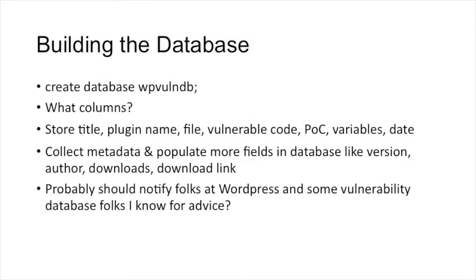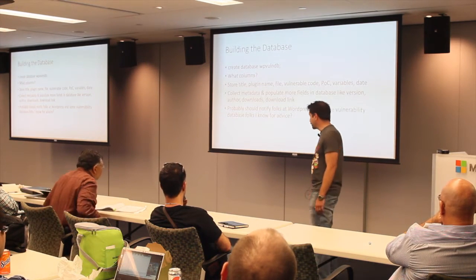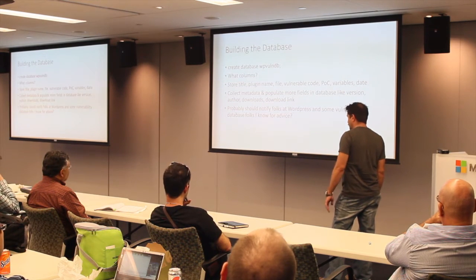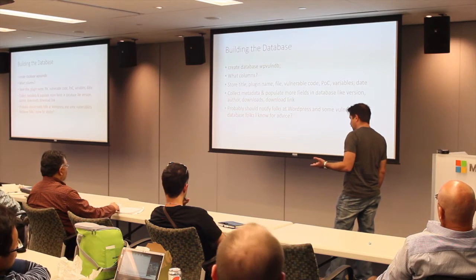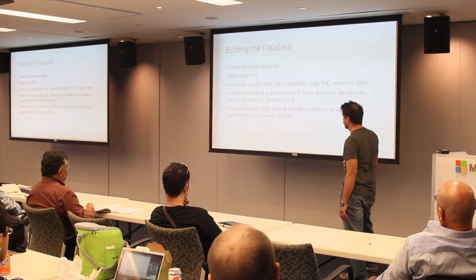I created a database called 'wp_only_me' — I know, very original. I stored columns for title, filename, plugin name, vulnerable code, proof of concept, the variables vulnerable to XSS injection, and a date. I also wanted to collect metadata: version number, author, download links, number of downloads. If I had the download count I could sort by plugin popularity — look at the top plugins by downloads and figure out which ones might be more prolific across the internet if this got really serious.